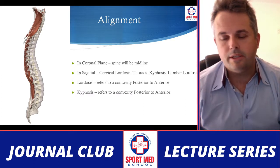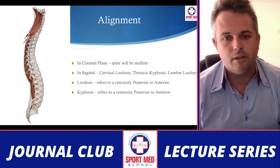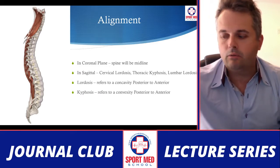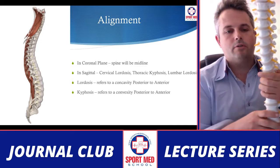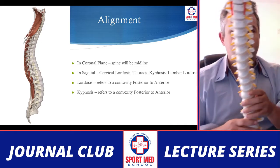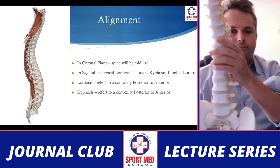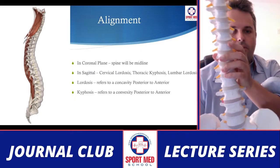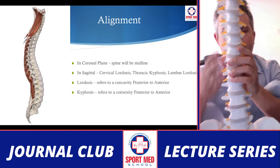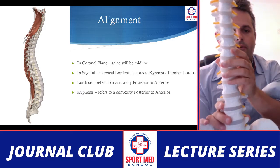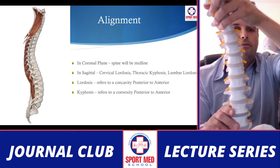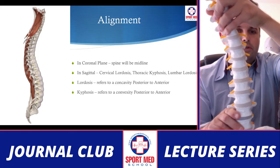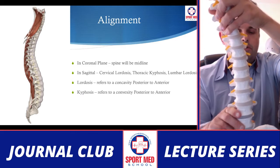First, we're going to talk about the normal alignment of the spine. In a coronal plane, viewing the spine straight on, that should typically be midline or straight. Veering off to the side is something we refer to as scoliosis — a lateral disruption of the curvature of the spine.